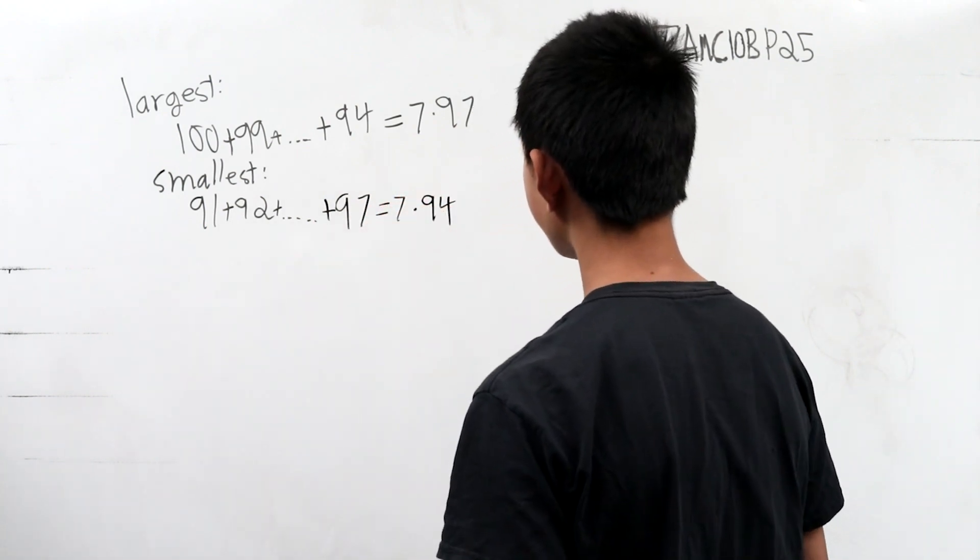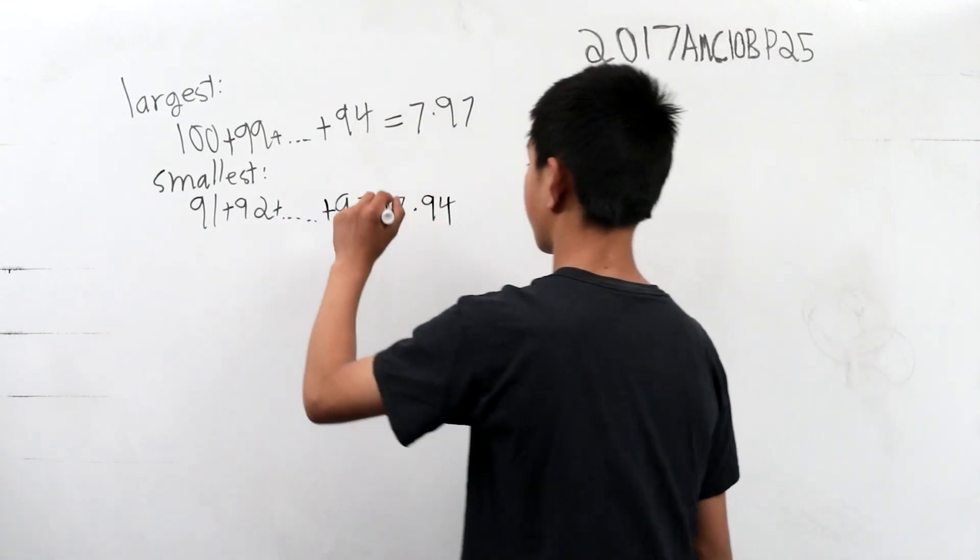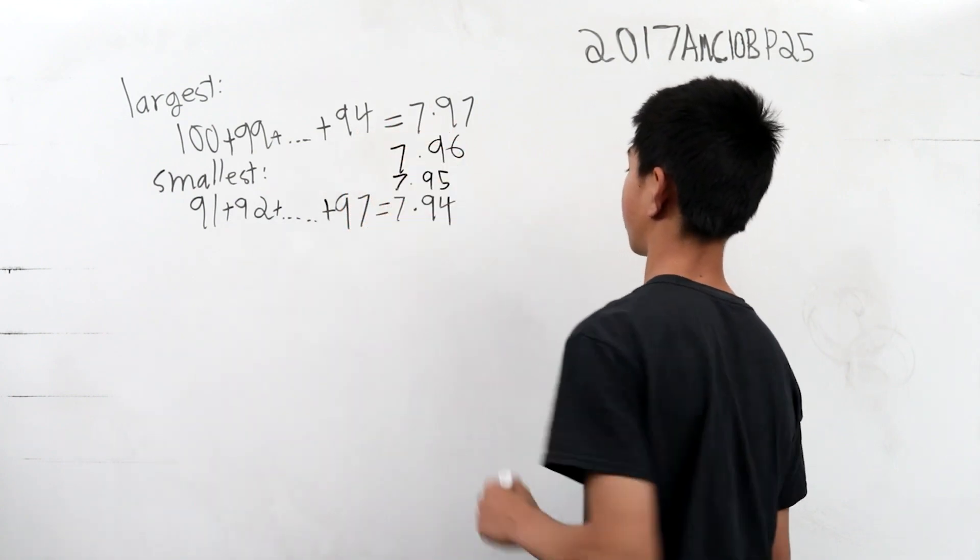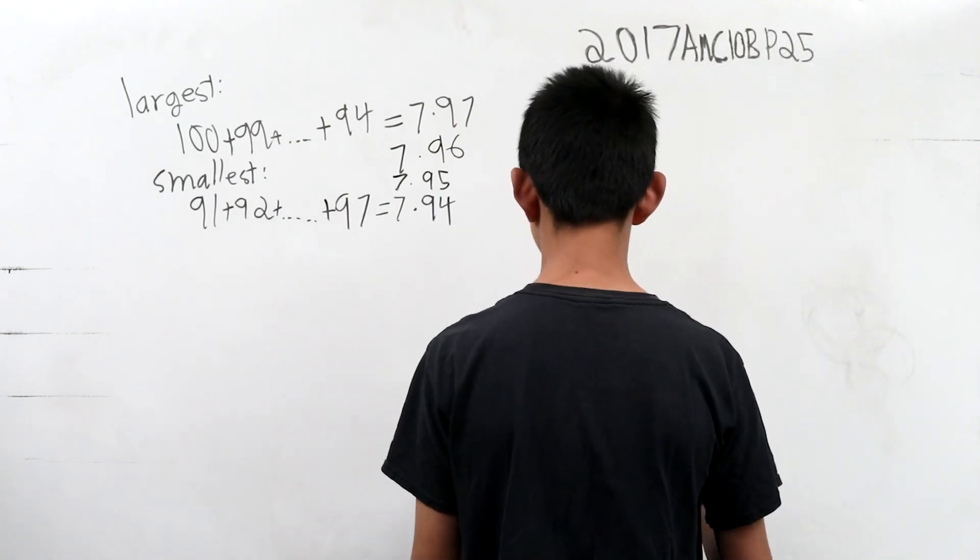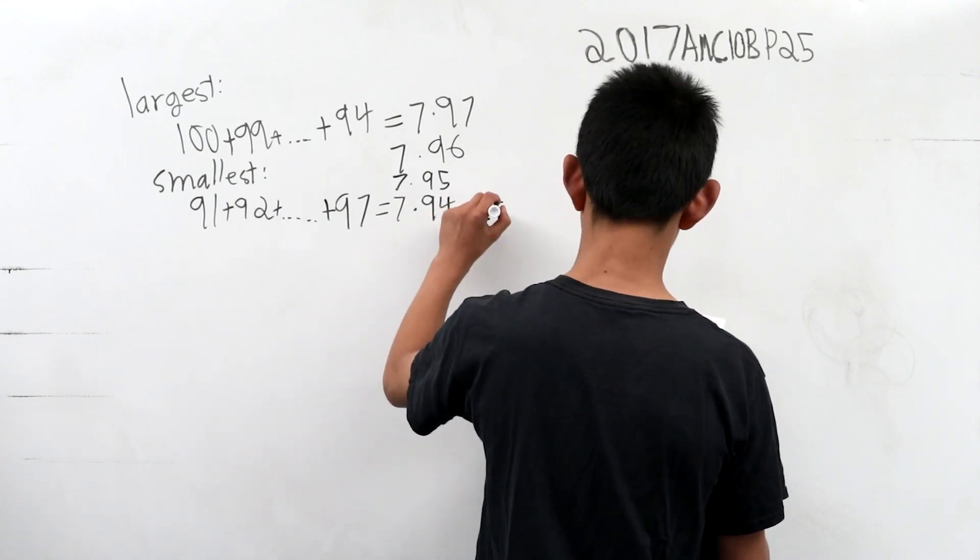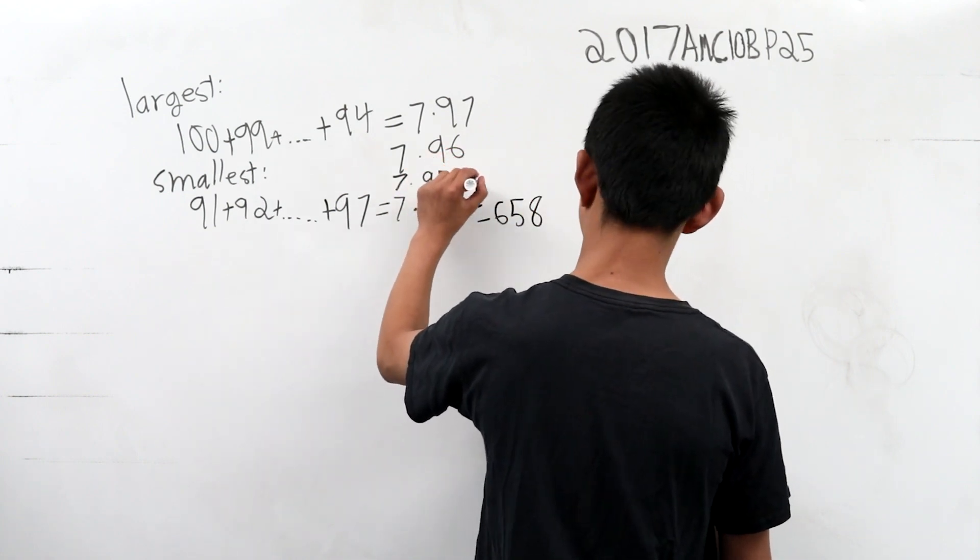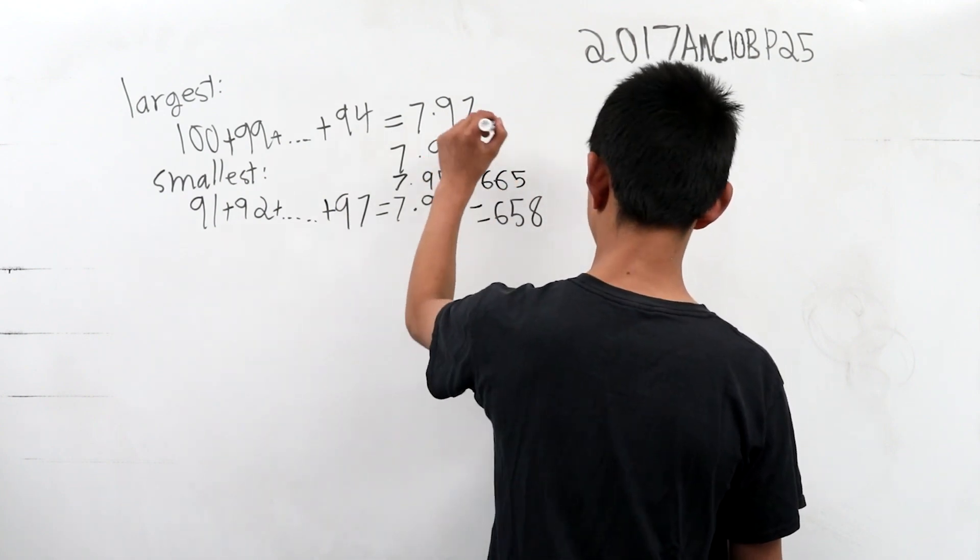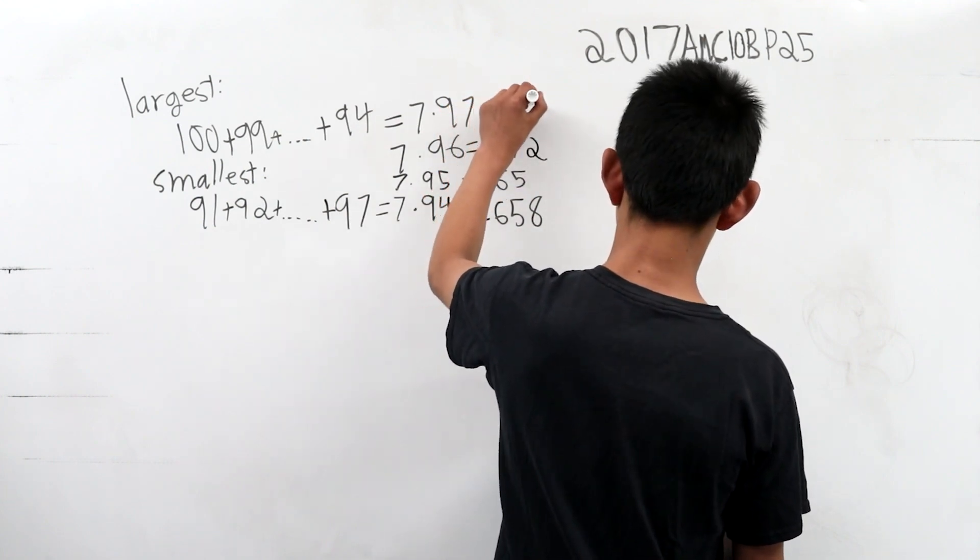And now we know that there are a few values in between these numbers because we found the largest and the smallest. There is seven times 95 and seven times 96 in between here. And now we can compute these different values. Seven times 94 is 658. Seven times 95 is equal to 665. Seven times 96 is 672. Seven times 97 is 679.